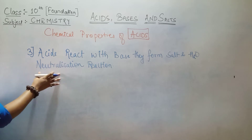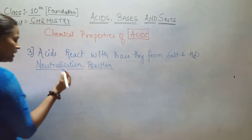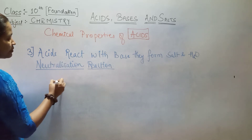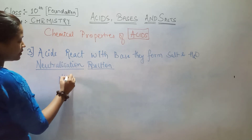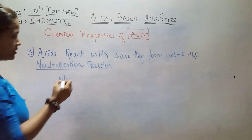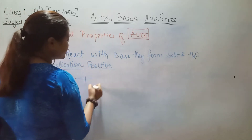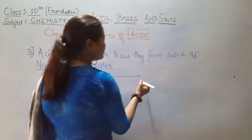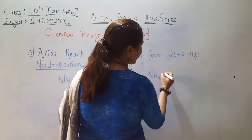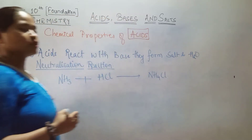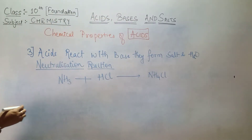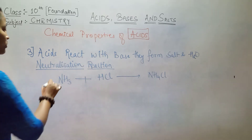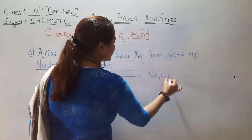We have seen many examples of this neutralization reaction. For example, NH3, which is a weak base, combines with the strong acid HCl to give ammonium chloride, which is a salt. But in this reaction, there is no release of water — this is an exception you have to remember.